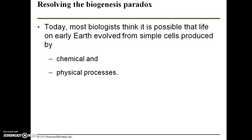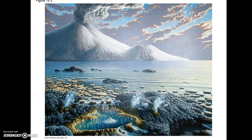Scientists truly believed that life on earth evolved from simple cells that were produced by chemical and physical processes. This is a depiction of what the earth would have looked like about three billion years ago — the atmosphere was a lot different, and it was a much more hostile and volatile environment back then. But these sorts of conditions have been simulated in the lab, and scientists have been able to observe organic compounds forming from inorganic compounds.